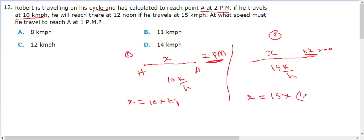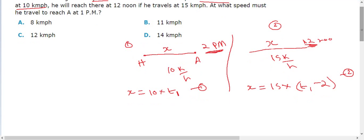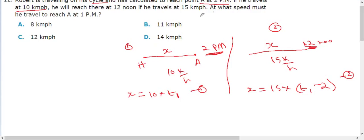This is the second equation. The next question is, at what speed must he travel to reach at 1 PM? This is the same x and 1 PM. This is the same speed level.